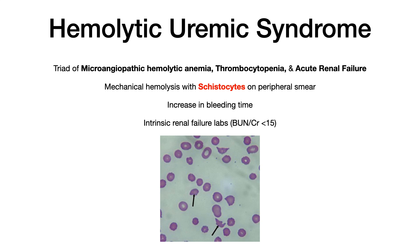While on your exam O157:H7 E. coli is the more common answer for HUS, you need to know Shigella itself can cause it. HUS is a triad of microangiopathic hemolytic anemia, thrombocytopenia, and acute renal failure. You'll likely see a picture of a schistocyte — a sheared red blood cell. Lab findings include increased bleeding time, decreased hemoglobin from anemia, decreased platelet count from platelet consumption, and labs consistent with intrinsic renal failure. In intrinsic renal failure, the BUN-to-creatinine ratio is usually less than 15.